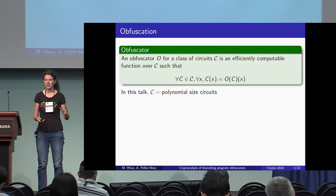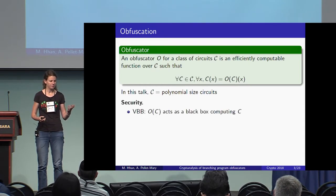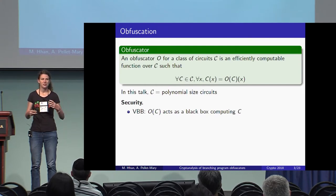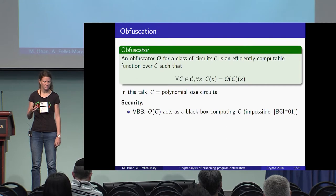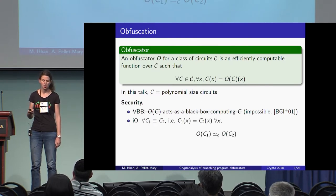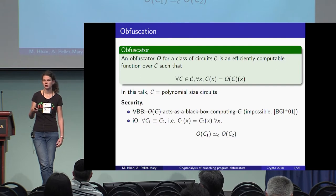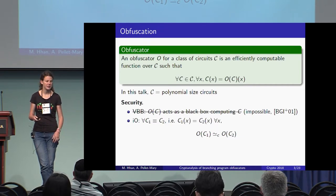What are the security requirements? The most natural definition is called Virtual Black Box (VBB), which requires that the obfuscated program should reveal nothing about the initial circuit except its input-output behavior. The problem is that it has been shown to be impossible to achieve — a result of Barak et al. in 2001. In the same article, they also proposed a new security definition called indistinguishability obfuscation.